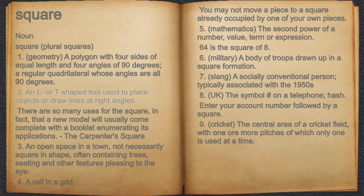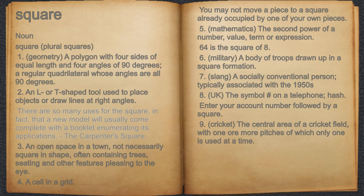2. An L or T shaped tool used to place objects or draw lines at right angles. For example, there are so many uses for the square, in fact, that the new model will usually come complete with a booklet enumerating its applications. The Carpenter's Square.